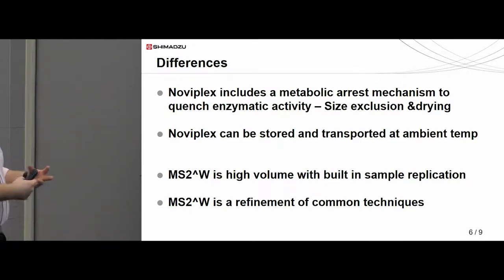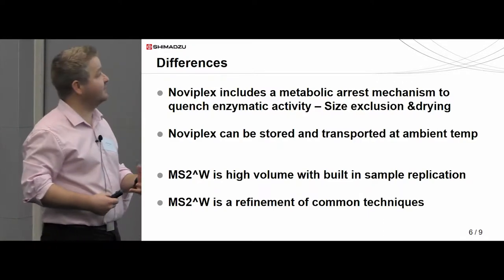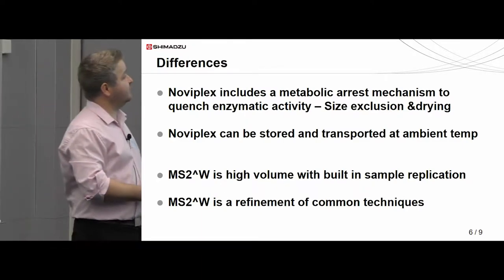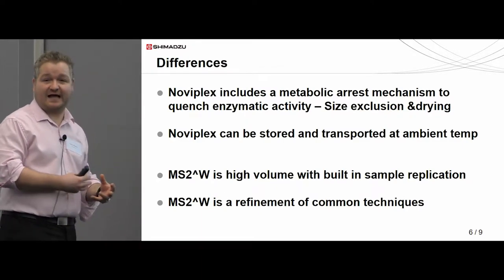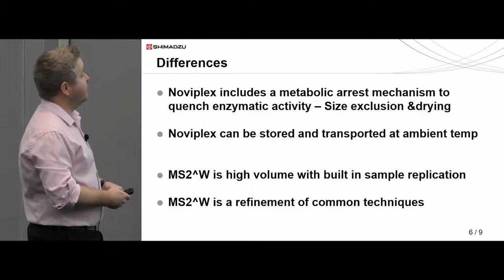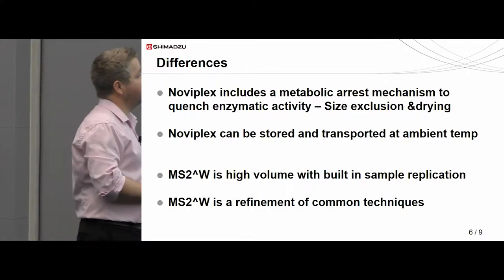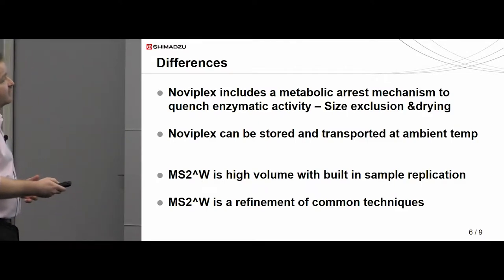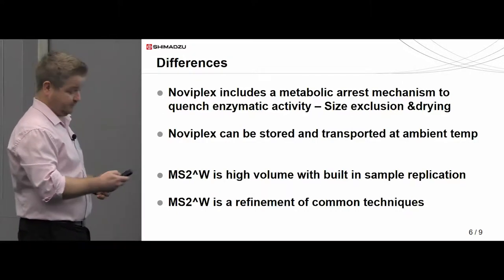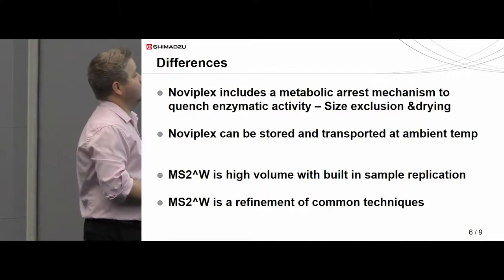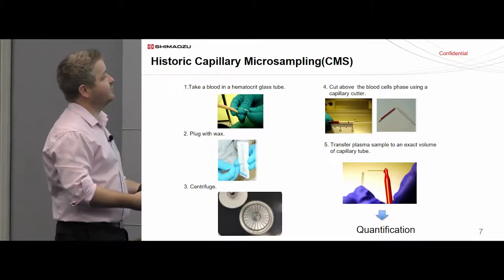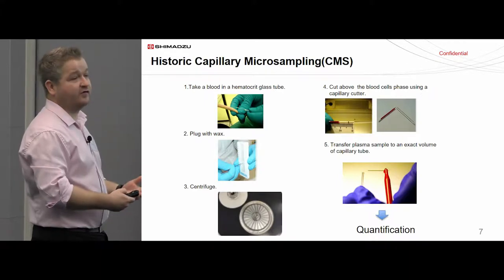There are some differences. I really like the Noviplex card that includes a metabolic arrest mechanism to quench enzymatic activity — this is size exclusion by drying of the sample — meaning that Noviplex cards can be stored and transported at relatively ambient conditions, getting away from the problem of shipping things on dry ice. The MS2W is a high-volume device with built-in sample replication, and is a refinement of common capillary micro-sampling techniques.